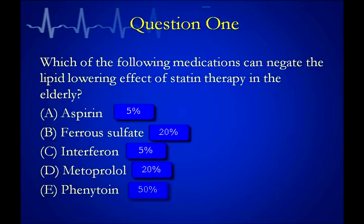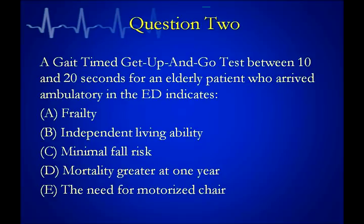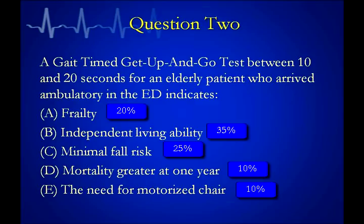Next question: a timed Get-Up-and-Go test between 10 and 20 seconds for an elderly patient who arrived ambulatory in the ED predicts which of the following: frailty, the ability to independently live, minimal risk of falls, mortality greater at one year, or the need for a motorized chair? We have almost a bell-shaped curve on answers A, B, and C. We'll revisit this one a little later.